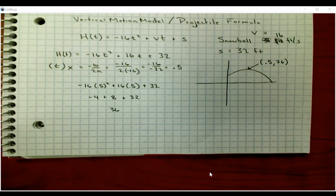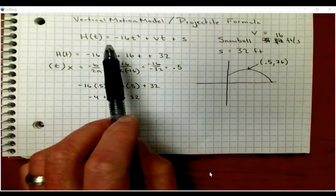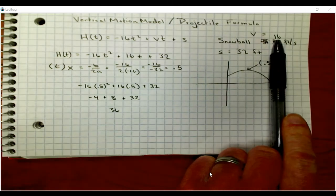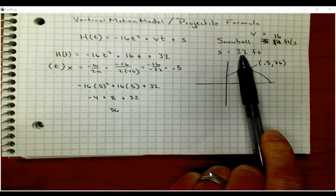All right, welcome back to our last little mini lesson on the projectile formula. Our circumstance here was someone throwing a snowball at an initial velocity of 16 feet per second, starting at a height of 32.